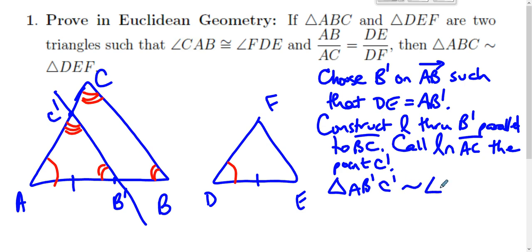And so by the parallel projection theorem, AB prime over AB is AC prime over AC.